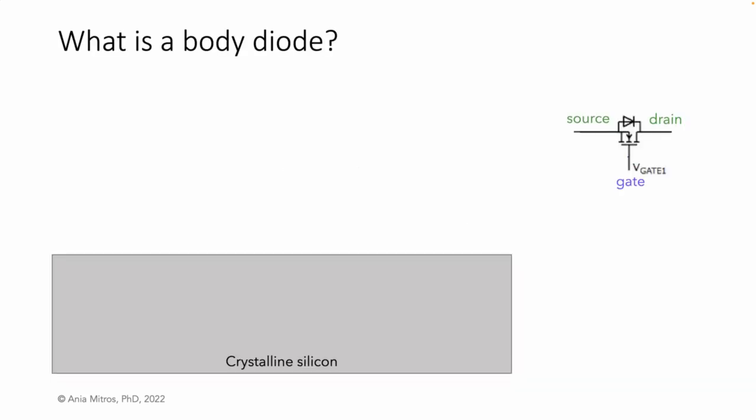In making a transistor, we start with crystalline silicon. To make an NFET, we first dope that silicon with positive charge carriers. This creates a p-type substrate or p-type well.